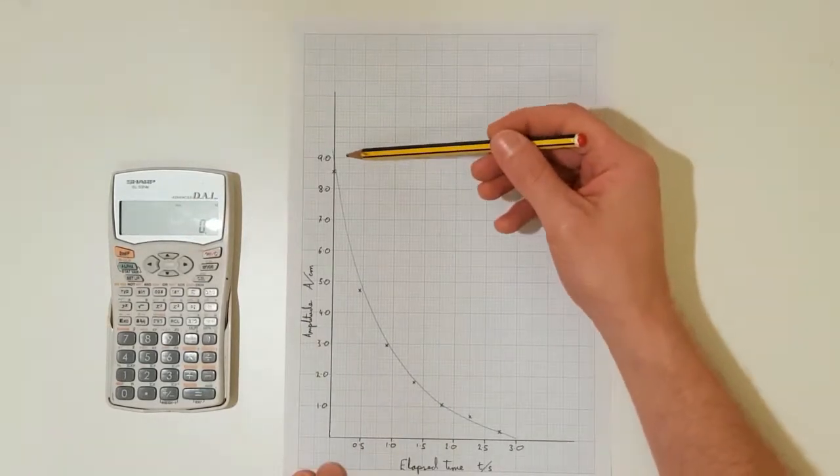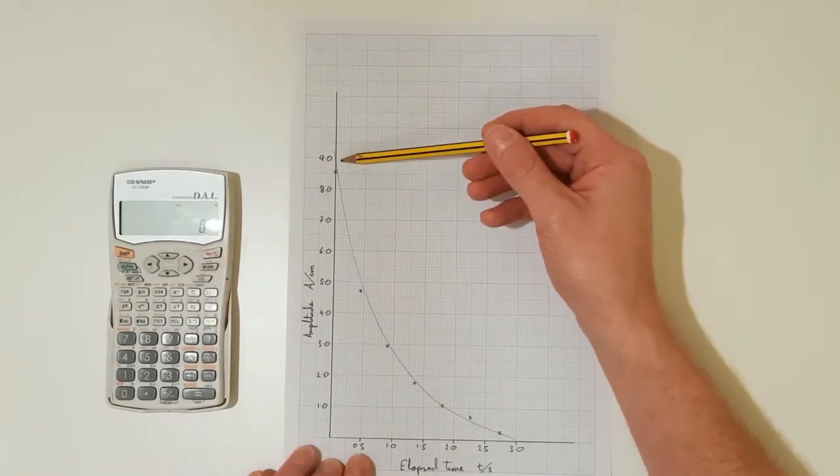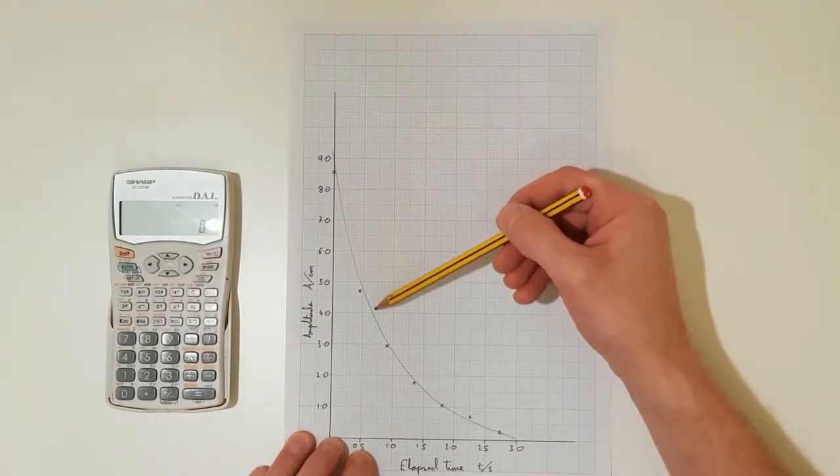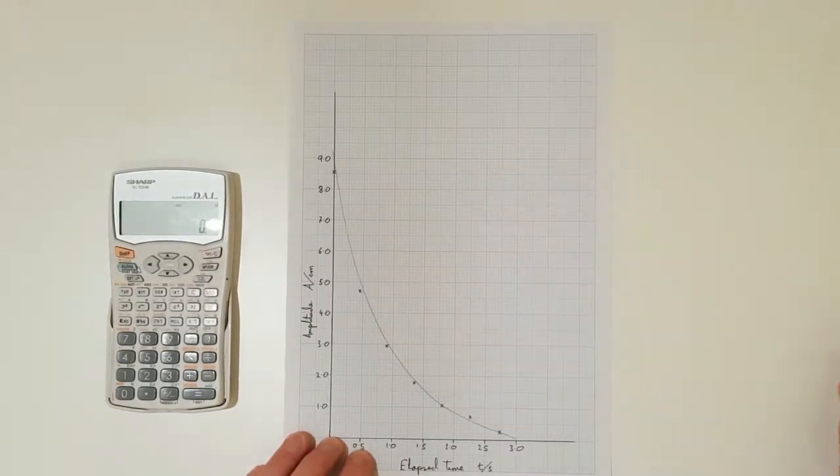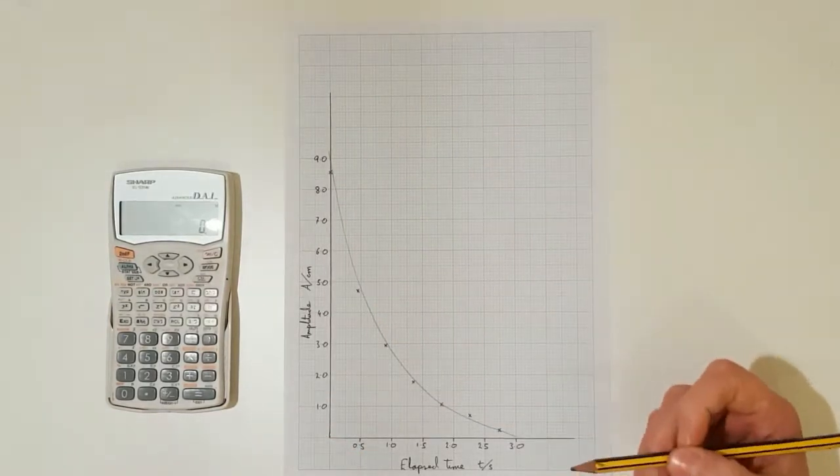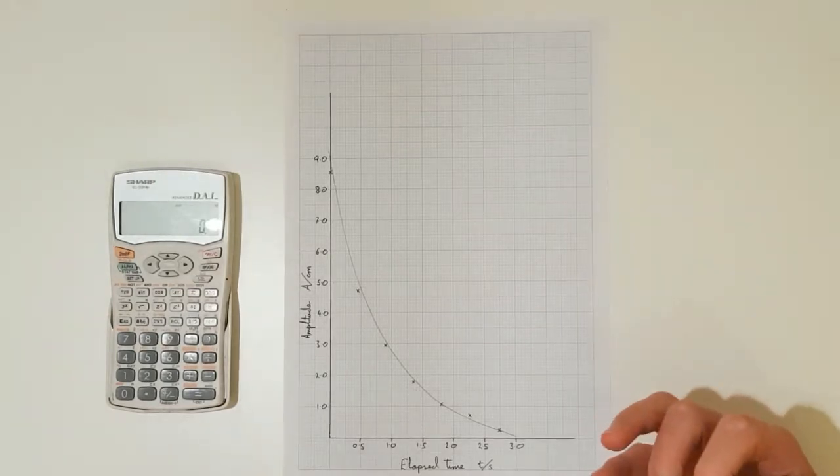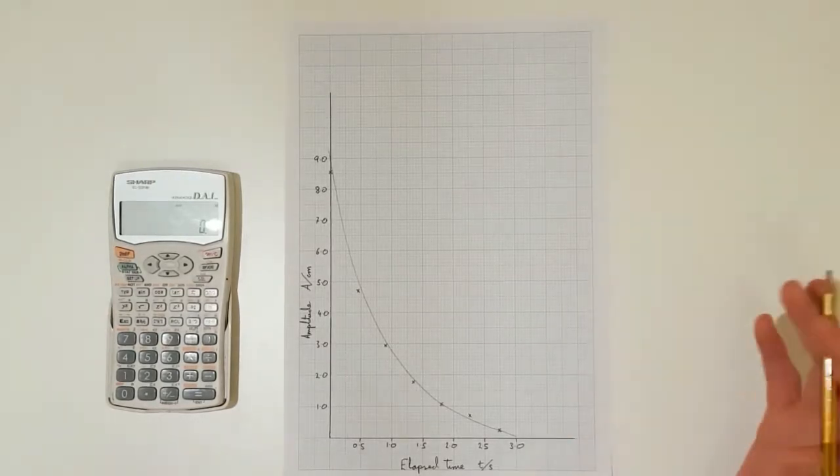So I have drawn my line of best fit and we can see that it is clearly a curve with a decreasing gradient. So we need to use this graph to determine whether the decay of the water in the U-tube is exponential.